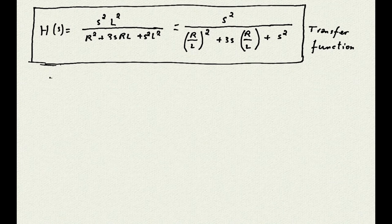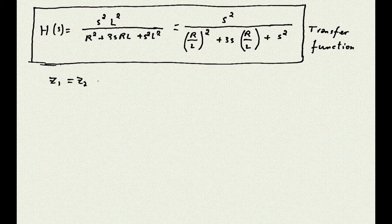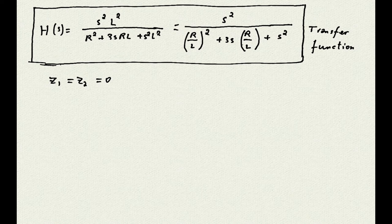This transfer function has two zeros and two poles. The roots of the numerator, our zeros, are both equal to zero. The roots of the denominator, our poles, have the same corrective factor as the RC filter. Yes, the same.